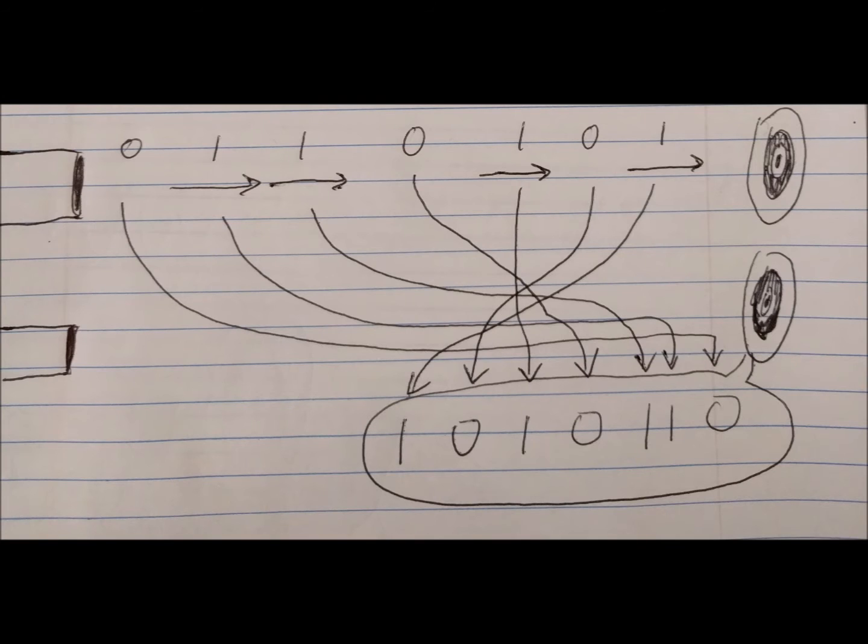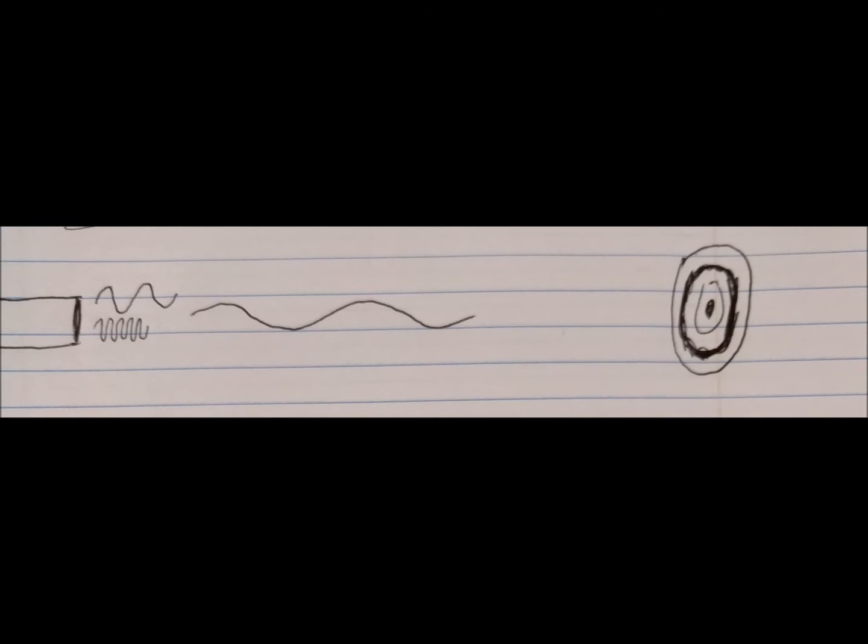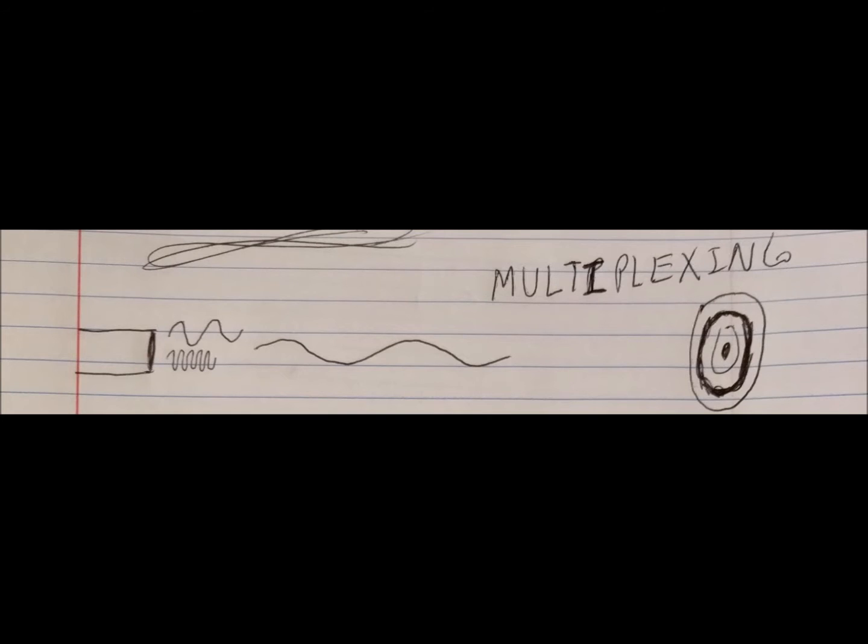Now, usually, people send multiple signals down the same fiber. Each signal has a different frequency, therefore allowing every signal to be distinct from each other. That's what we call multiplexing.